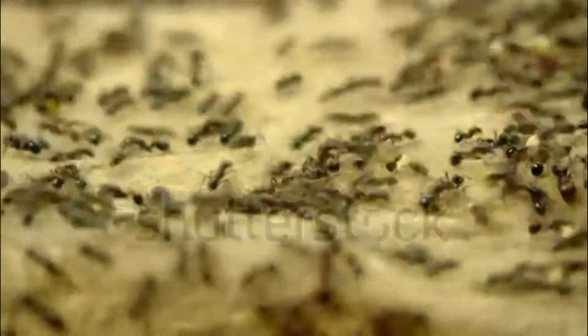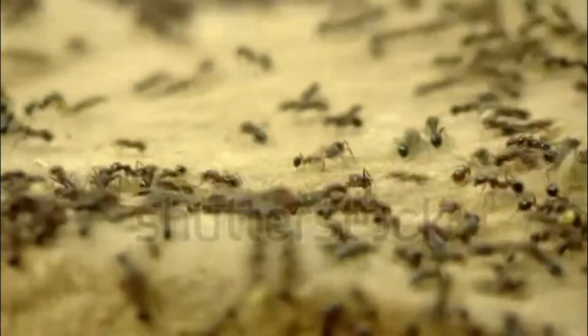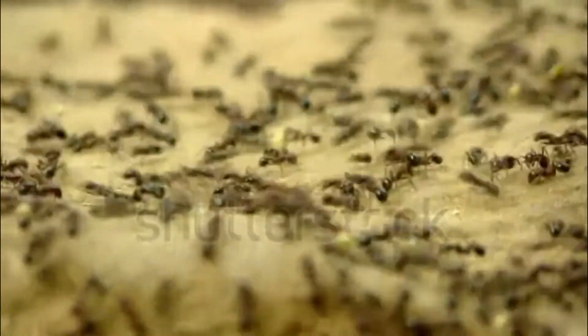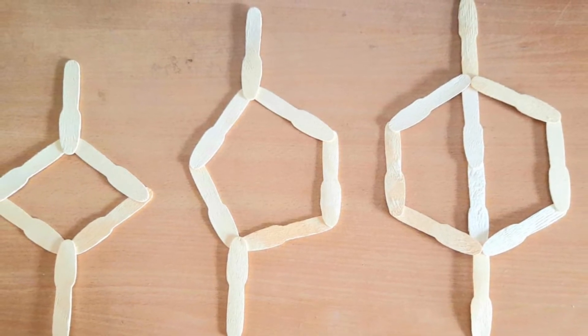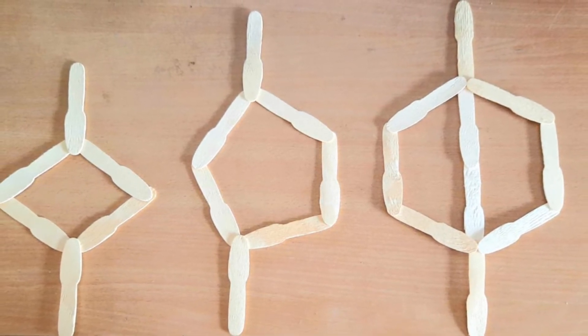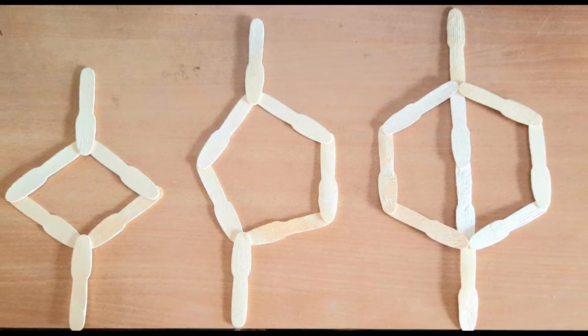To study whether ants are capable of finding the shortest path to a source of food, two other kinds of bridges were also used. The bridge shown in the middle has two paths of unequal length, and the bridge on the right has two paths of equal length and the path in the middle is shorter than the two.